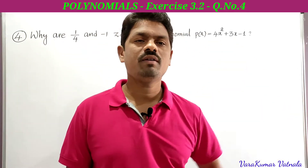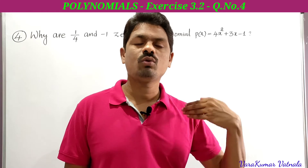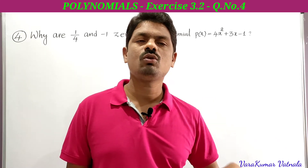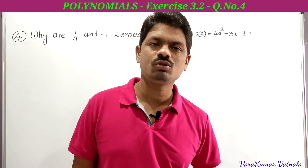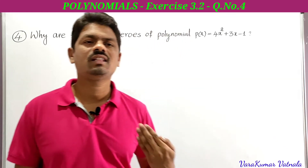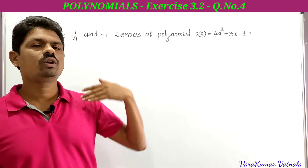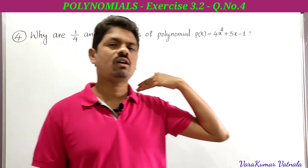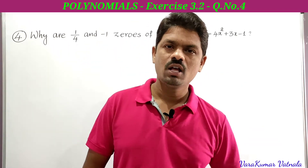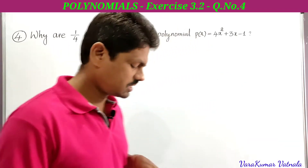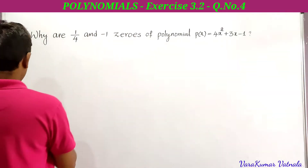If we get p(1/4) = 0 and p(-1) = 0, we can say that 1/4 and -1 are the zeros of p(x). So let's see how we can solve this.